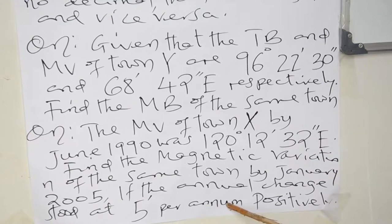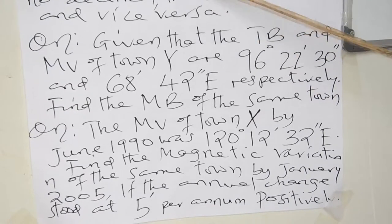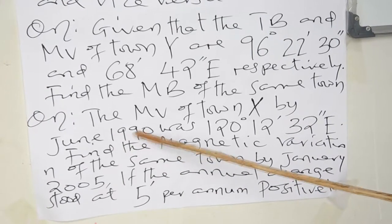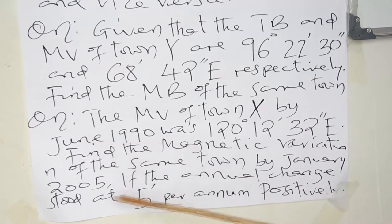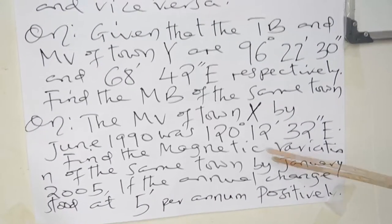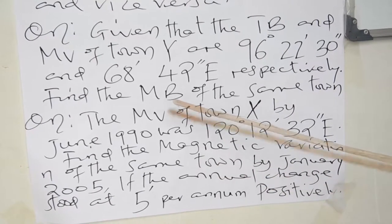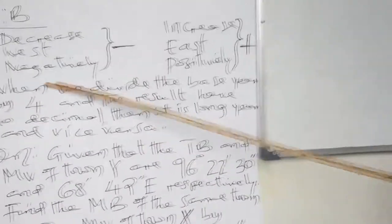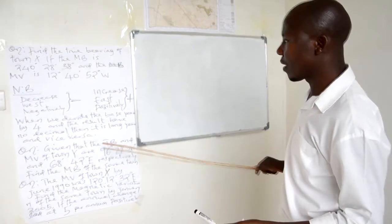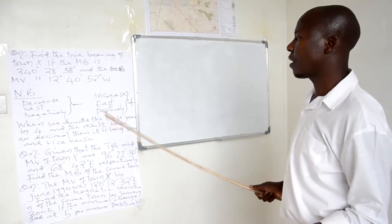Dear students, here you have to be keen. As instructed, wherever these are years — which is 2005 and this is 1990 — and this is June and this is January. Therefore, you can be given a certain month or a certain year which is a long year or short year. Therefore, you have to be keen to know wherever the base year is. Wherever that base year is divided by 4 and remains decimal, that is a short year; but if no decimal, that is the long year.